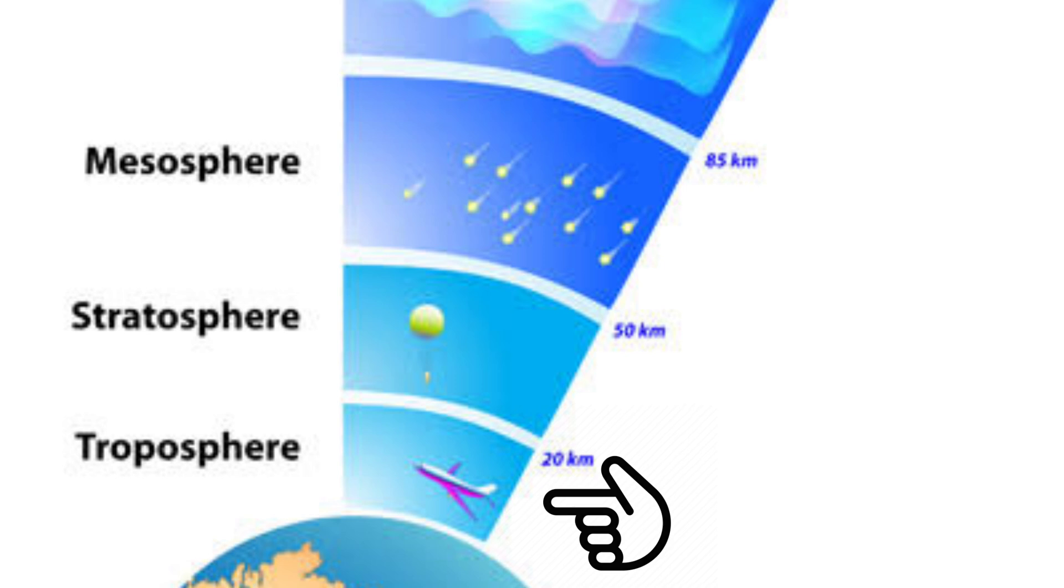The stratosphere is found 14.5 to 50 kilometers above the Earth's surface. The ozone layer that protects the Earth from the sun's harmful UV radiation is found in this layer.